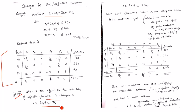With the change in z, we need to recompute the net evaluations (zj − cj). Importantly, we do not need to recompute zj − cj for basic variables, since by default they are zero. We only need to worry about the non-basic variables. The formula for zj − cj is the dot product of the cb vector with the column vector of the variable, minus cj.